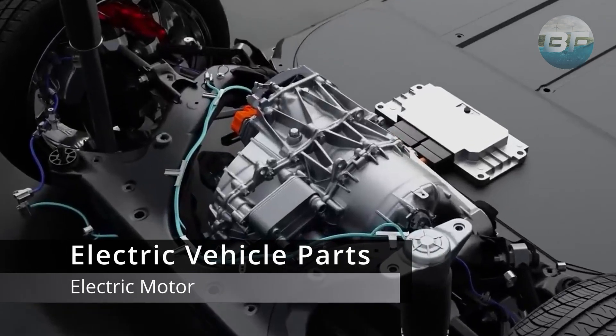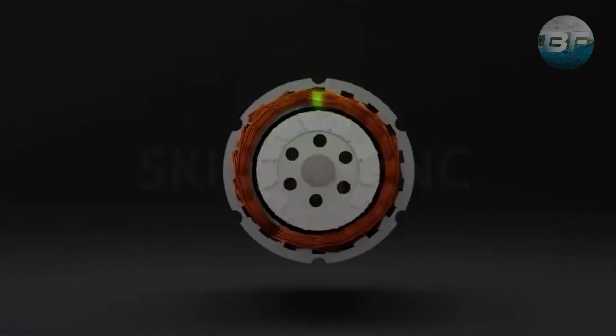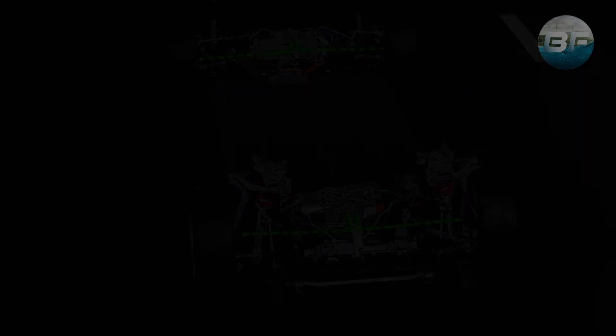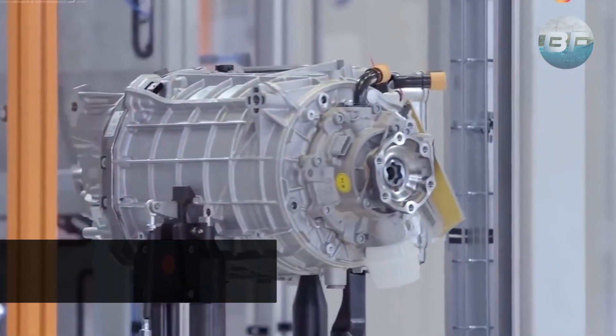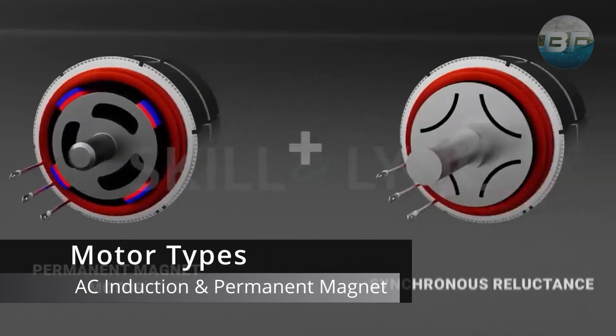Next, we have the electric motor. The motor converts electrical energy from the battery into mechanical energy that powers the wheels. There are two main types of electric motors used in electric vehicles, AC induction motors and permanent magnet motors.